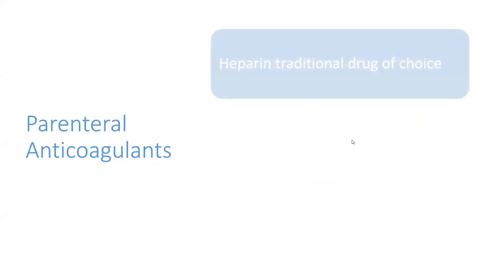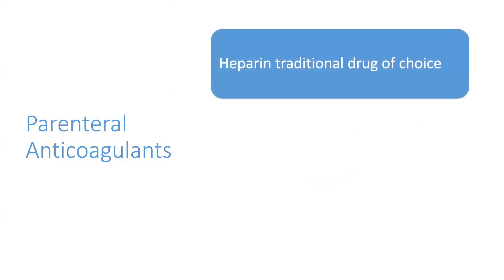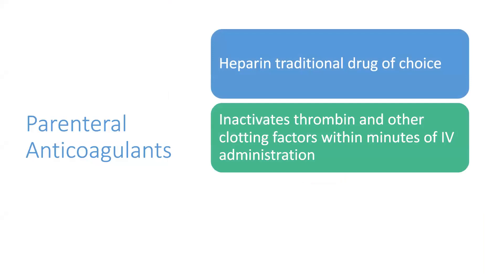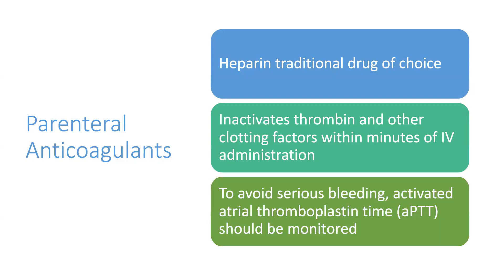Parenteral anticoagulants include heparin, which is the traditional drug of choice. It inactivates thrombin and other clotting factors within minutes of IV administration. To avoid serious bleeding, activated partial thromboplastin time (APTT) is always monitored before giving heparin — similar to checking glucose levels before insulin in diabetes.